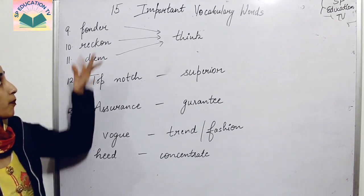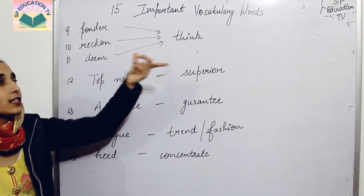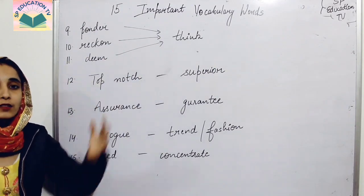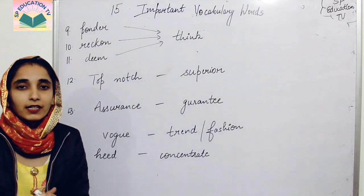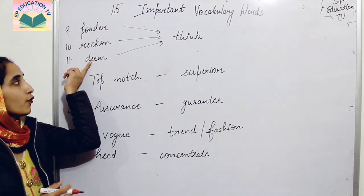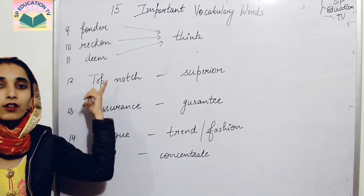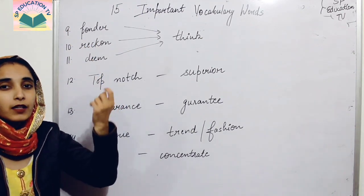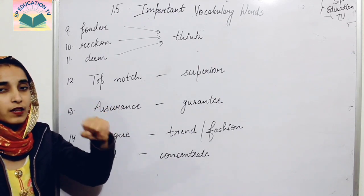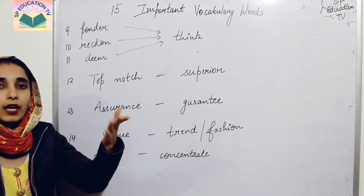Next words are ponder, reckon, and deem. These three words mean think. When we look at Task 2, some people think, you can say few masses deem that, few masses reckon that, few masses ponder. You can use these words in Task 2, so you can use these words in speaking.